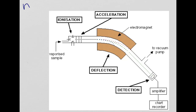Now we're on the mass spectrometer. Basically, there are four main stages, and it's just a case of learning them. First of all, a vaporized sample goes in — and it always has to be vaporized, make sure that you know that.